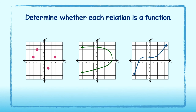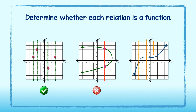Your turn. Use the vertical line test to determine whether each relation is a function. Since none of these vertical lines pass through more than one point, the first relation is a function. Take a look at the second graph — we only have to draw one vertical line to see that it passes through more than one point. This relation is not a function. Lastly, we will draw several vertical lines through the third graph. There is no instance in which the line passes through more than one point on the graph. Therefore, it is a function.